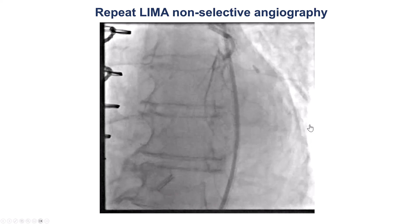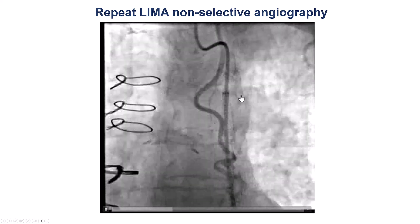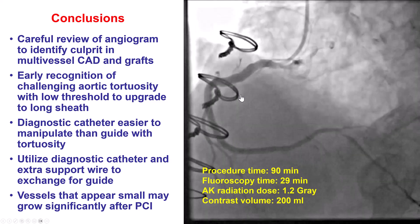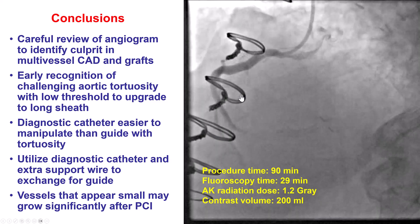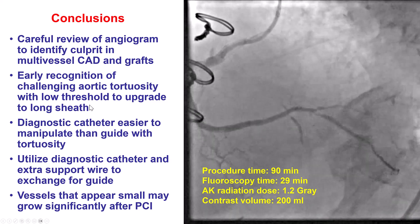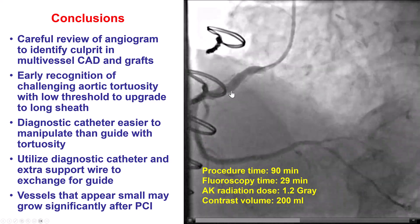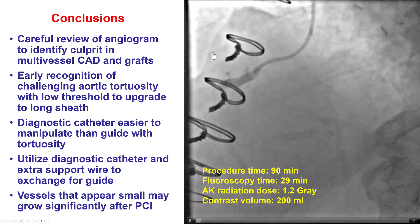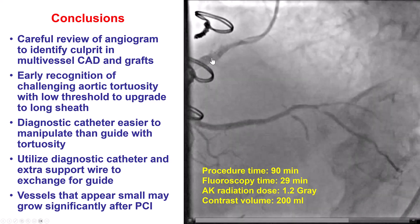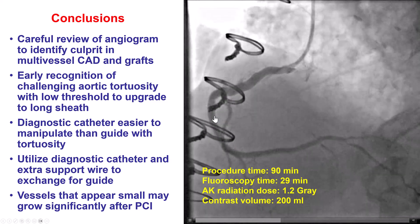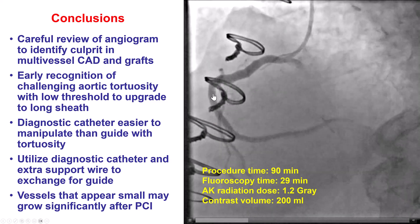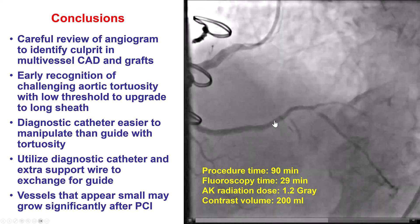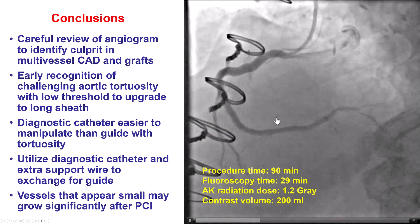Before coming out, we did a more selective picture showing good flow on the LIMA down to a diagonal branch. Several lessons from this case: the first is that identifying the culprit can be challenging, especially in previous bypass patients and especially in the early hours of the day when everyone is sleep-deprived. Aortic tortuosity can be a major problem for engaging the coronary arteries. One solution is to use a long sheath and slightly smaller catheters — we used an eight-French sheath and were able to engage with diagnostic catheters. The trick of using the diagnostic catheter to engage and advancing a 300-centimeter supportive wire was pivotal to allow us to engage the right coronary artery with a guide. Although the vessel initially appeared very small, after we predilated there was significant increase in vessel size, and the patient's symptoms subsequently resolved.